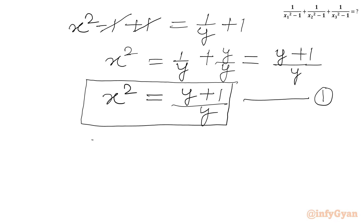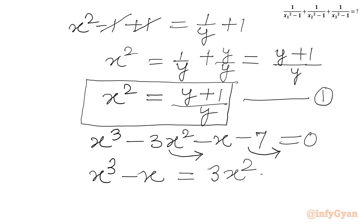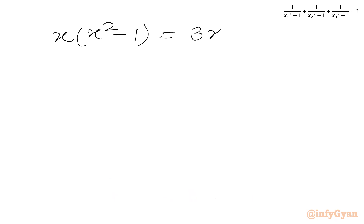Now we write the given cubic equation x³ minus 3x² minus x minus 7 equals 0. Taking minus 3x² and minus 7 to the RHS, we get x³ minus x on the LHS and 3x² plus 7 on the RHS. Taking x as common from the LHS, we get x times (x² - 1), and the RHS is 3x² plus 7.